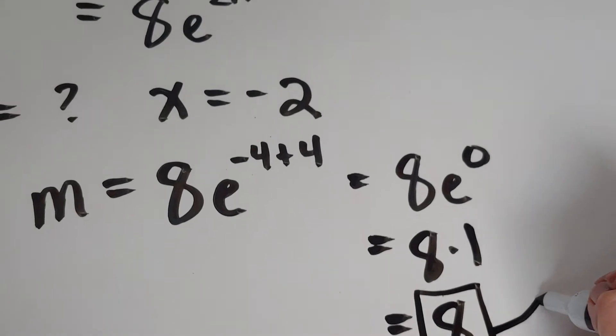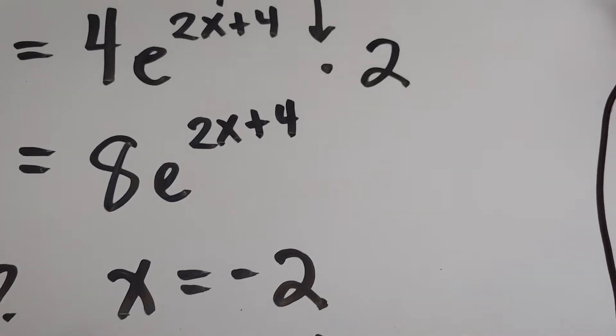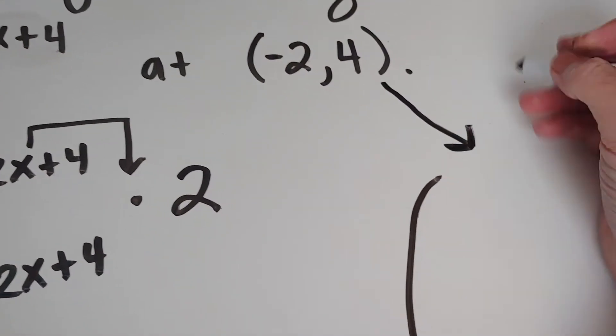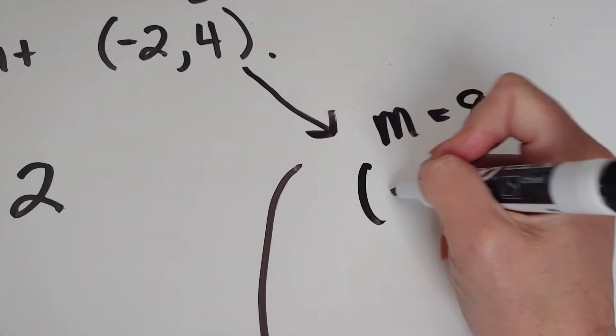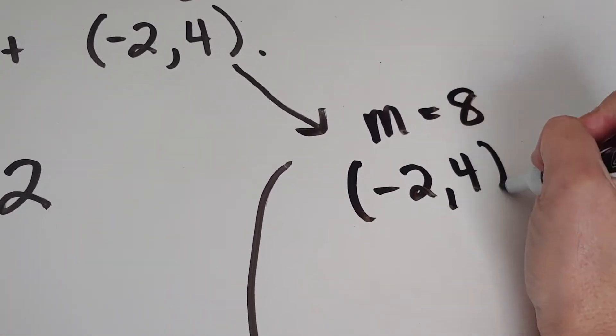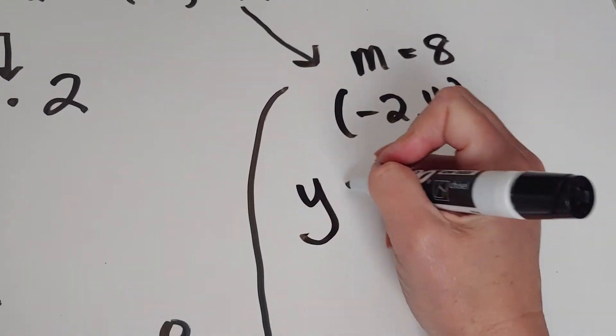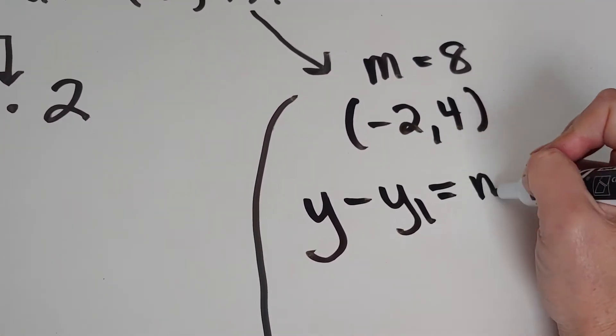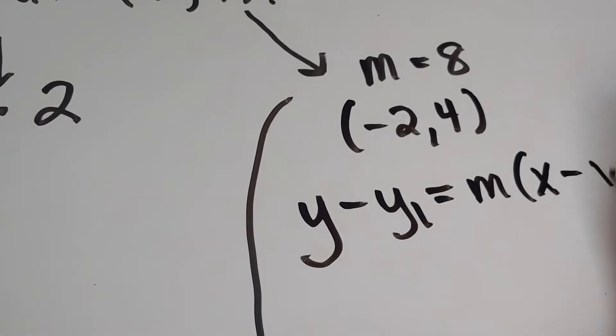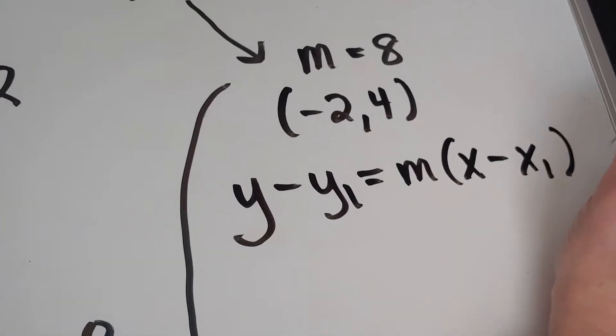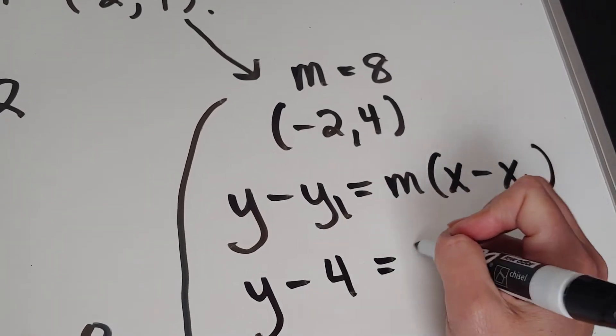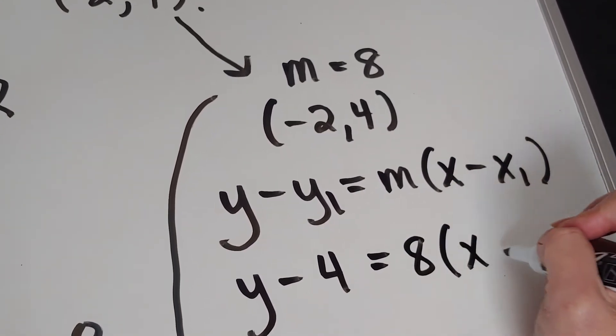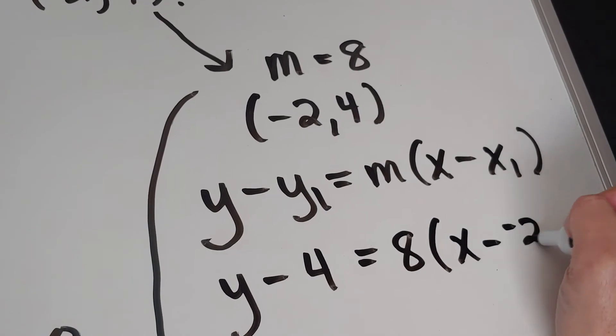All right, I'm now going to take that slope and this point and put it together. So my slope was 8. My point is negative 2 comma 4. So we're going to use my favorite y minus y1 equals m times x minus x1. I'm going to plug in the point 4, the slope 8, and the x value of negative 2.